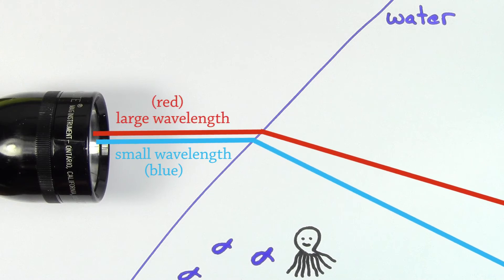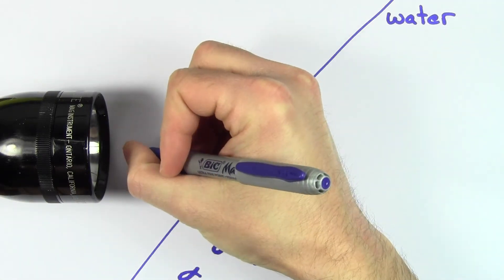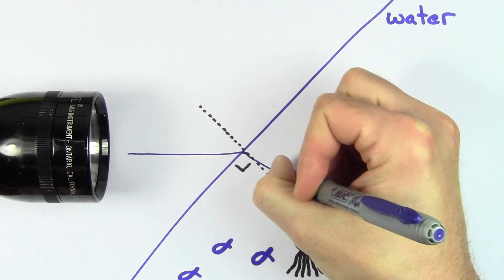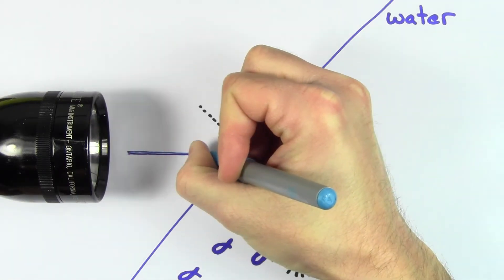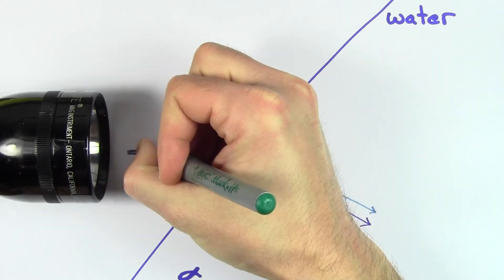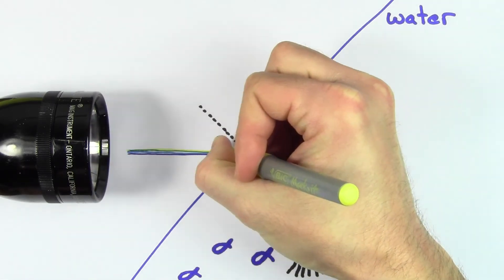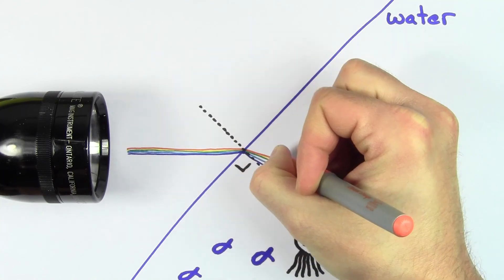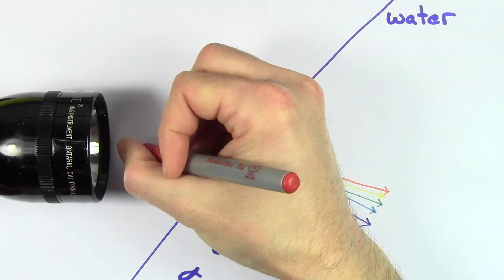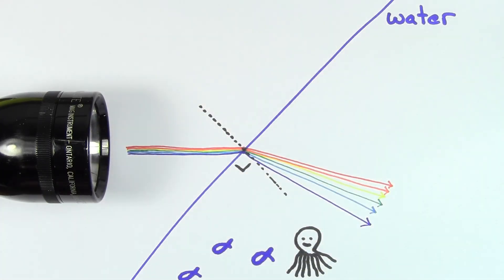This is why in water, the violet light would bend the most since it has the smallest wavelength for visible light. Blue light would bend slightly less, green light a little less, yellow light a little less than that, orange light even less, and red light would bend the least.